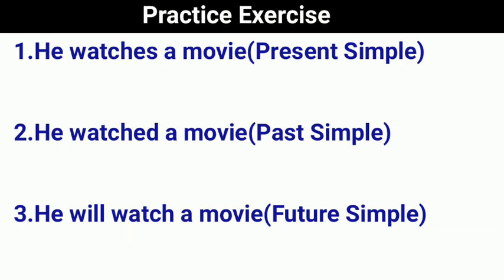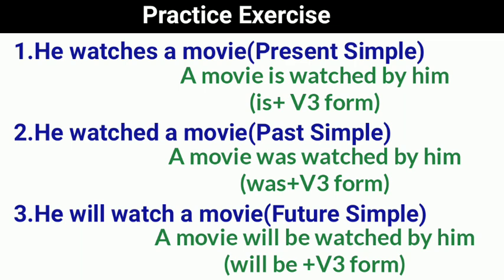Let's recap the rules. For Present Simple passive: is + verb third form. For Past Simple passive: was + verb third form. For Future Simple passive: will be + verb third form. Practice exercise: convert 'He washes a movie' to all three tenses — present: 'A movie is washed by him,' past: 'A movie was washed by him,' future: 'A movie will be washed by him.' If you liked this video, please like, share, and comment your queries. Thank you!